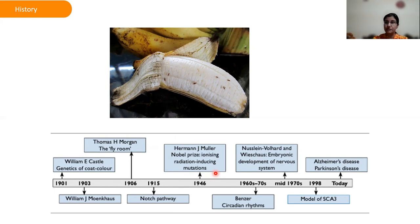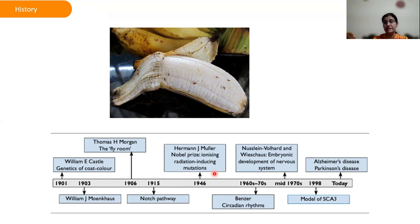Morgan, his students, and his wife all worked together with this little fruit fly, providing direct experimental evidence for the chromosomal theory of inheritance by confirming that genes are indeed located on chromosomes. Research in the fly room at Columbia University, where Morgan worked from 1910 to 1928, established the new post-Mendelian genetics as an essential component of biological studies. Many fundamental discoveries were made in the fly room, and Drosophila became commonly known as the central organism of genetics.